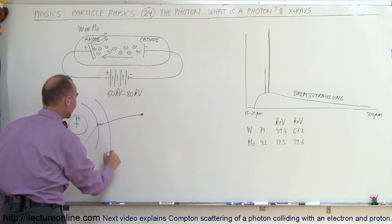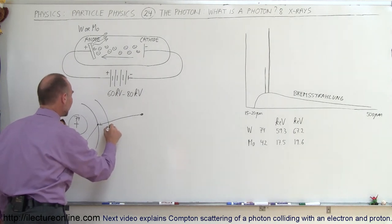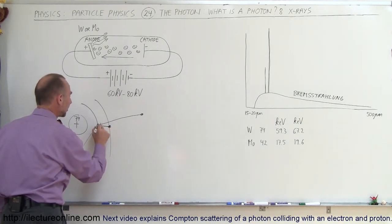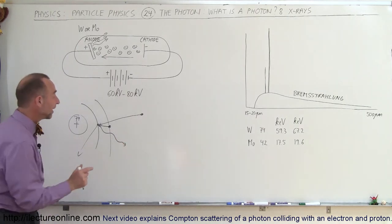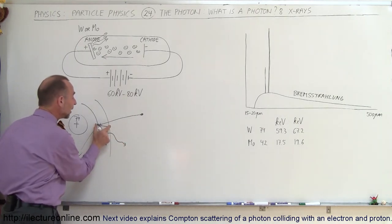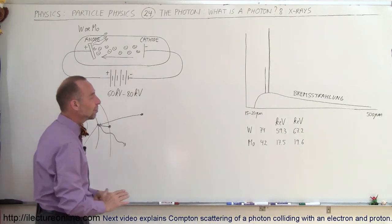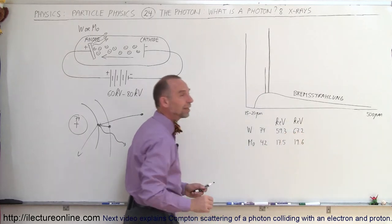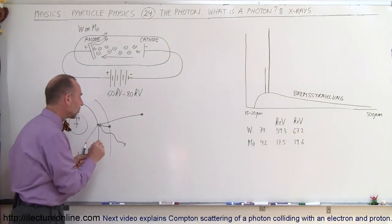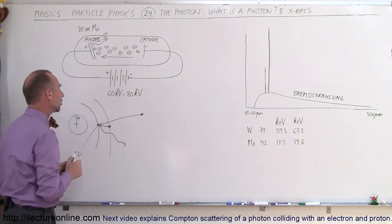Then, in the other level, the next level, an electron will fall down and take its place and that causes a photon to be produced. The difference is that the energy difference between these two levels is so high that it can be as much as 59.3 kiloelectron volts or 67.2 kiloelectron volts. There's two particular jumps that are peculiar to tungsten.